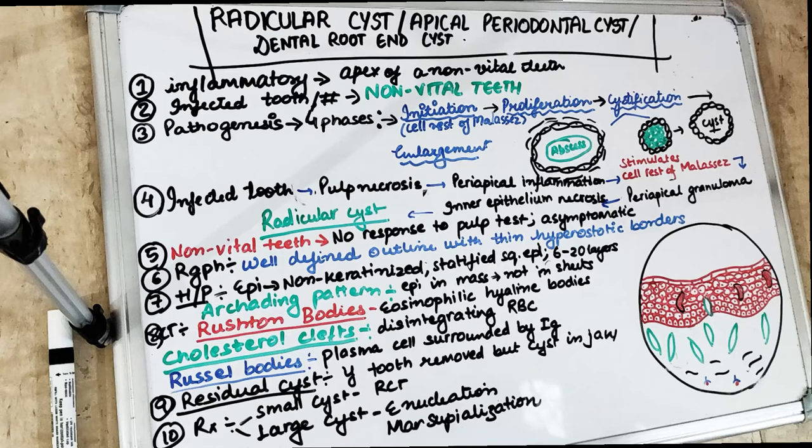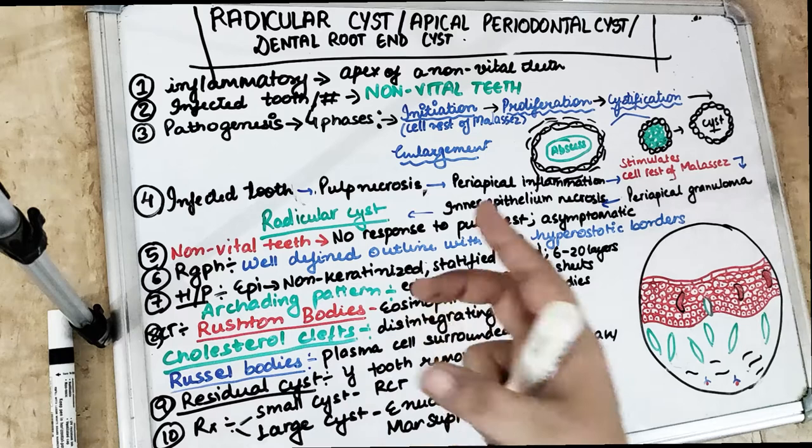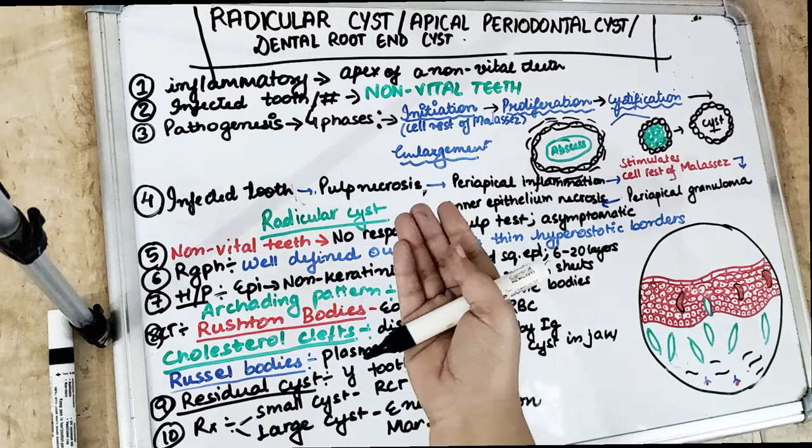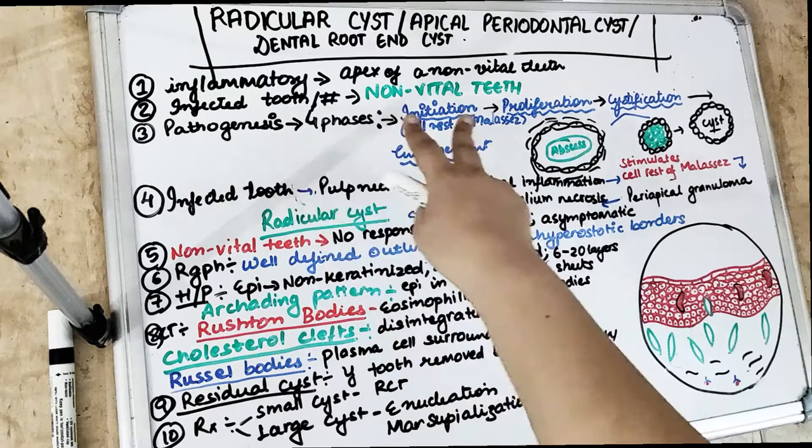Phase one is initiation — how the cyst is initiated. It is actually developed from bacterial infection coming from the pulp. Because of necrosis and pulpal inflammation, there is initiation of the cyst.